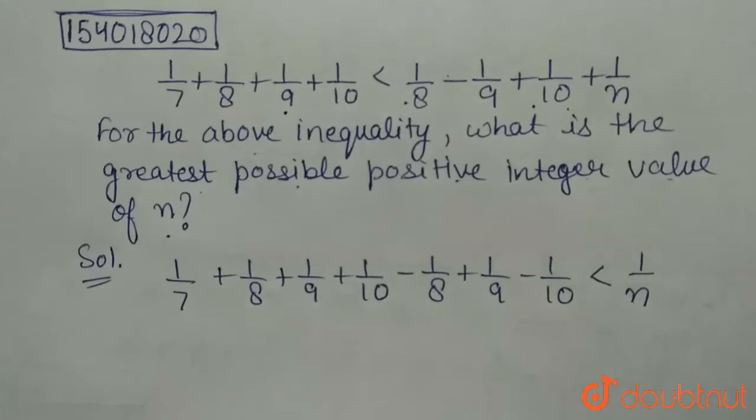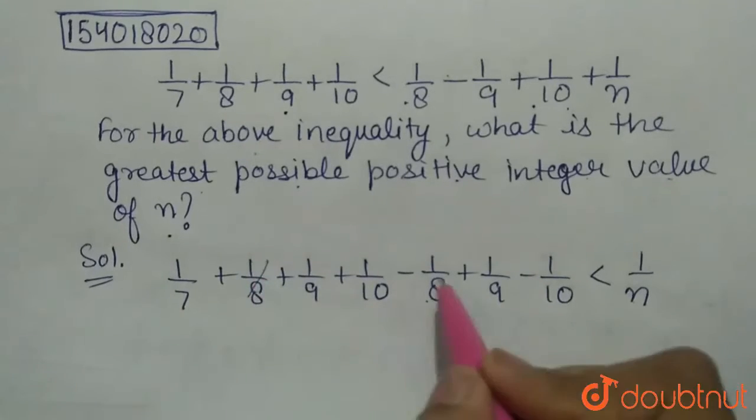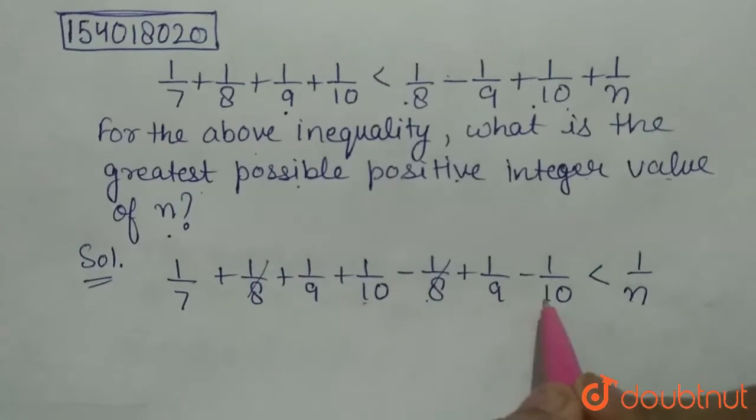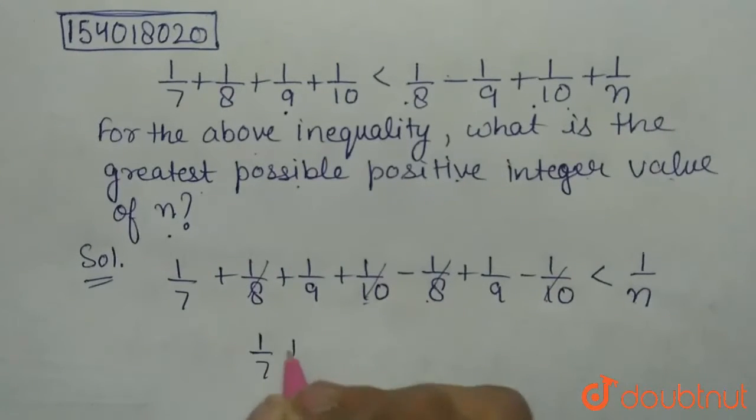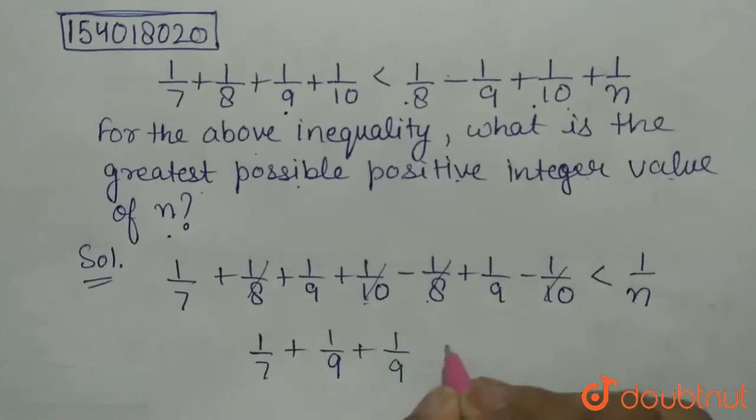Now, 1/8 and -1/8 both will get cancelled. 1/10 minus 1/10 will get cancelled, and we will be left with 1/7 + 1/9 + 1/9 < 1/n.